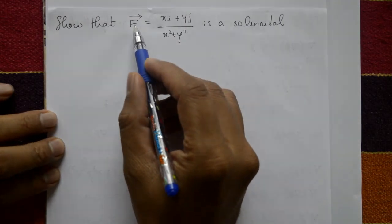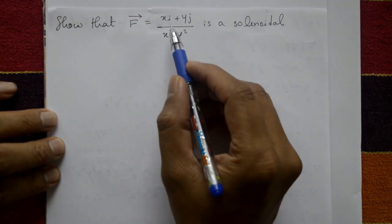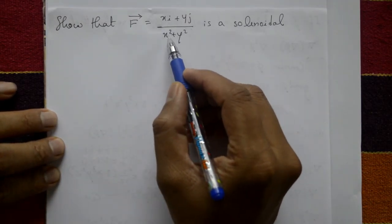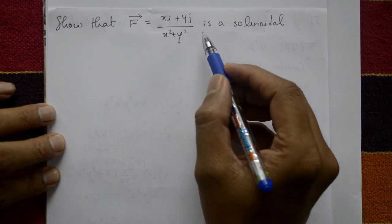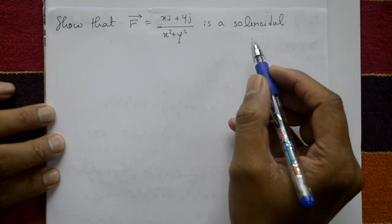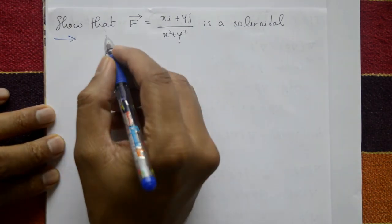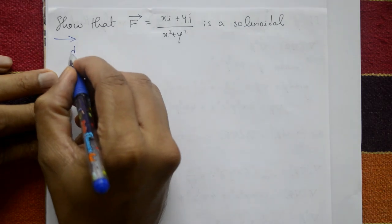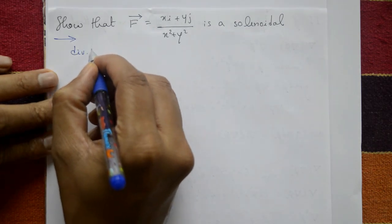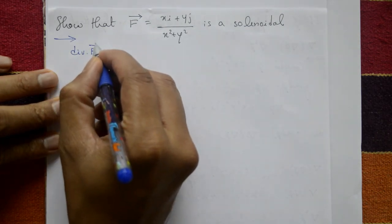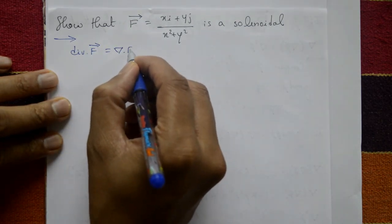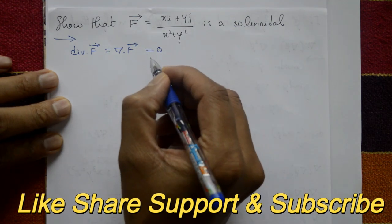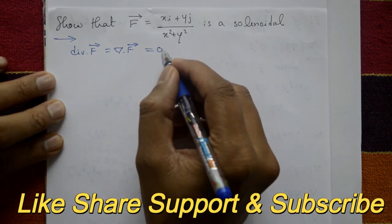Show that vector F equals xi plus yj upon x squared plus y squared is solenoidal. Solenoidal means divergence of F — del dot F — is equal to 0.